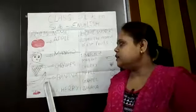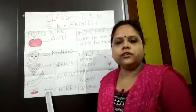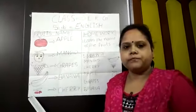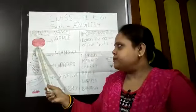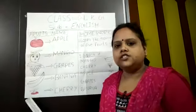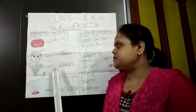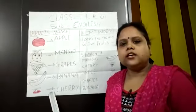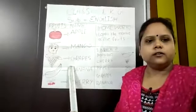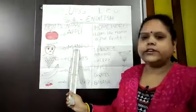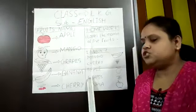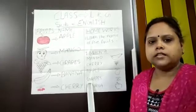And everybody learn these spellings carefully. Five fruit names: Apple, Mango, Grapes, Banana, Cherry — with spelling. And try to write in your notebook also. Any notebook you can write and learn. So children, today's homework are these two. Thank you.